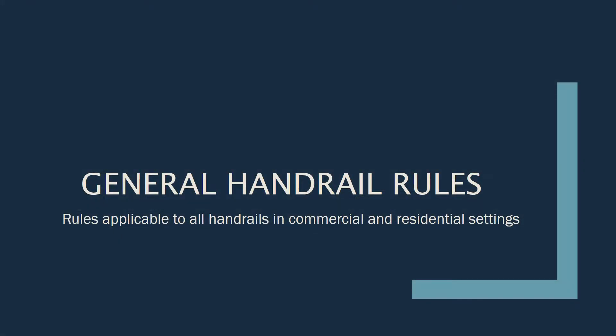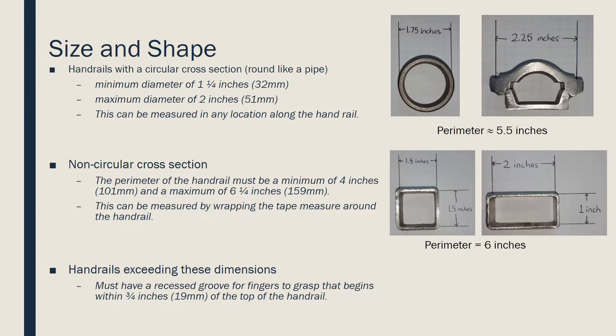Next, we will talk about general handrail rules, which are applicable to all handrails in commercial and residential settings. The size and shape of a handrail is often overlooked when handrails are checked for code violations; however, it is vital to ensure that a handrail is neither too big nor too small for a person to grasp. Handrails with a circular cross section — that is, round like a pipe — must have a minimum diameter of one and a quarter inches and a maximum diameter of two inches. This can be measured in any location along the handrail.